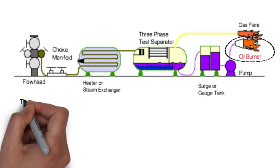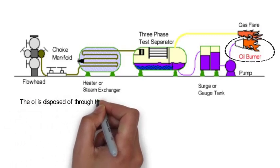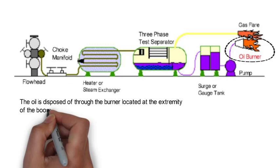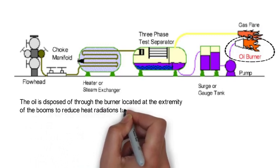The oil is disposed of through the burner located at the extremity of the booms to reduce heat radiations towards the rig.